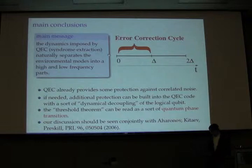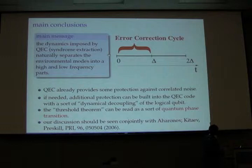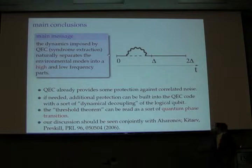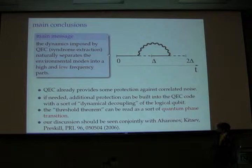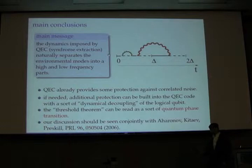We're going to try to use this same kind of idea in the error correction scheme. The main message I want to convey is that the dynamics imposed by QEC — encoding, extracting the syndrome, and recoding — actually naturally separates the environment into two components: a high-frequency component, which happens inside an error correction cycle, and a low-frequency component, which connects perturbations on different error correction cycles. This separation of scales tells us that there is something special and nice about error correction that already protects you a little bit from correlations. If we need additional protection, we can also use software methods to reduce the effect of correlations between different error correction cycles.